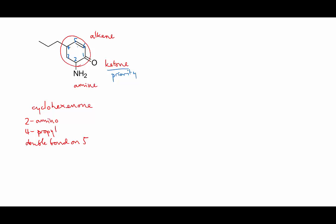So the final name is going to be 2-amino—remember the amine group when it's not the priority functional group will be named as a substituent—2-amino-4-propyl-cyclohex-5-enone. We don't have to specify that the ketone's on carbon number one since it is the priority functional group and it's in a ring, so it has to be number one.